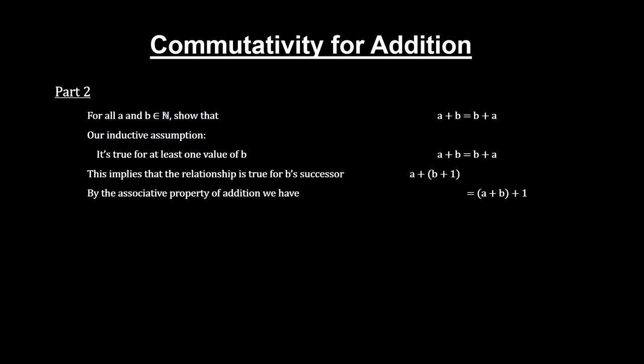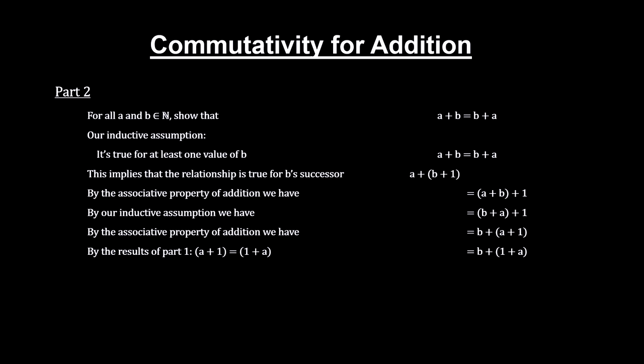Now in part 2, our inductive assumption is that a plus b equals b plus a for some value of b. We'll show that this implies that a plus b plus 1 is equal to b plus 1 plus a. So we'll start with a plus b plus 1. We can use the associative property around a and b. We can then use the inductive assumption to get b plus a plus 1. We use the associative property to get b plus a plus 1. And then use the results of part 1 that showed a plus 1 was equal to 1 plus a to get b plus 1 plus a. And then use the associative property again to get b plus 1 plus a. And we're done.